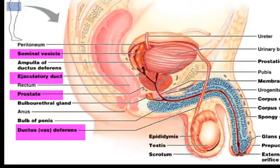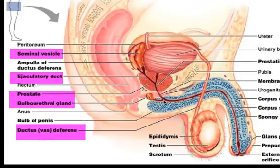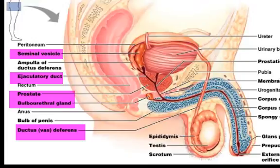The prostatic urethra combines with the bulbourethral gland — a small gland inferior to the prostate — which produces a thick, clear mucus prior to ejaculation. This mucus neutralizes acidic urine in the urethra and also helps to neutralize the acidic environment of the vagina, protecting the sperm.